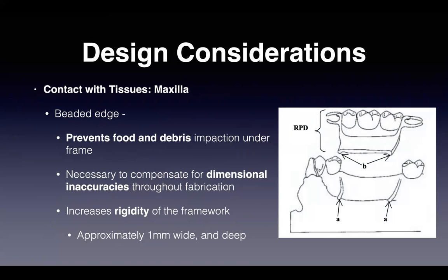The beaded edge also compensates for dimensional inaccuracies during fabrication and increases the rigidity of the framework. It is approximately 1 millimeter wide and deep. In the photo, areas indicated as 'A' are lines scribed into the master cast to reflect the beaded edge, and areas indicated as 'B' are the metal conforming to those scribes on the final finished framework. This is comparable to the post-dam seal on a complete denture, helping to seal the denture and prevent debris impaction.